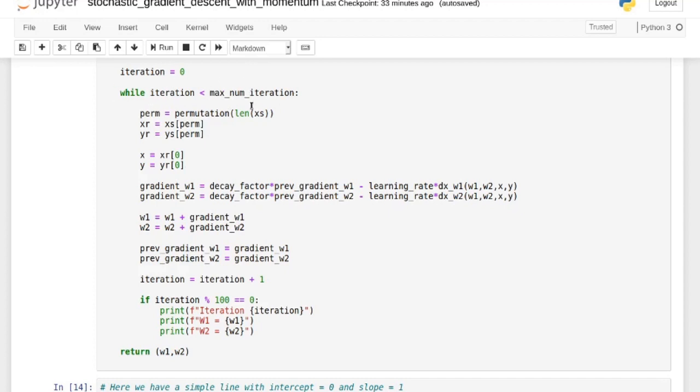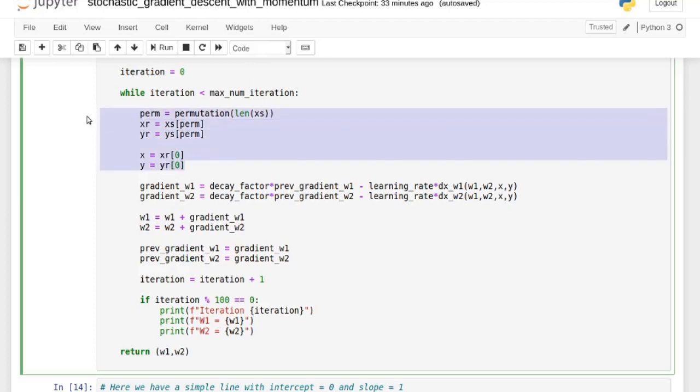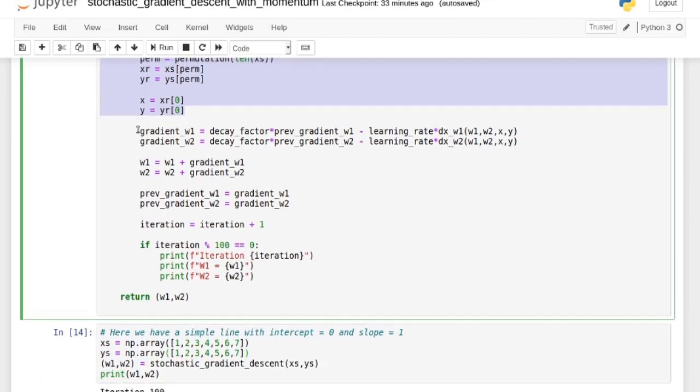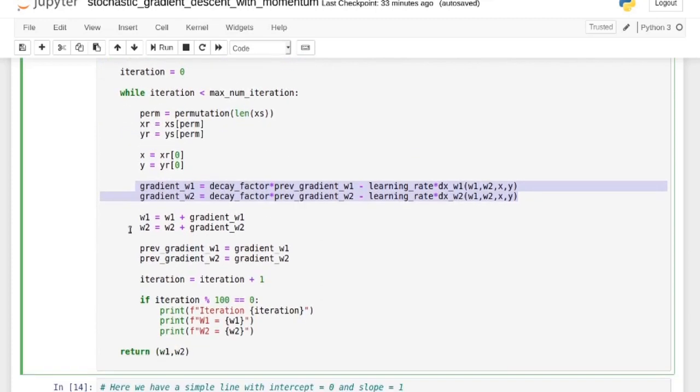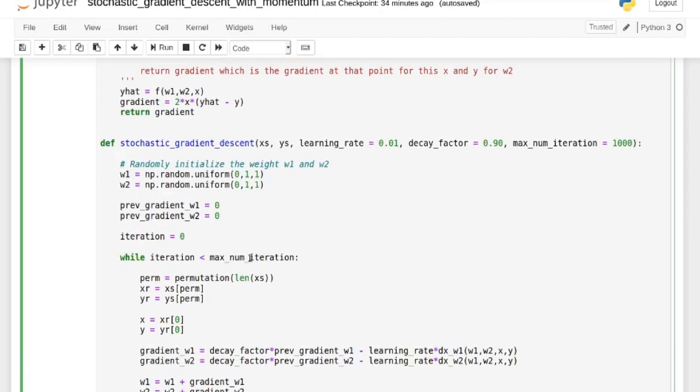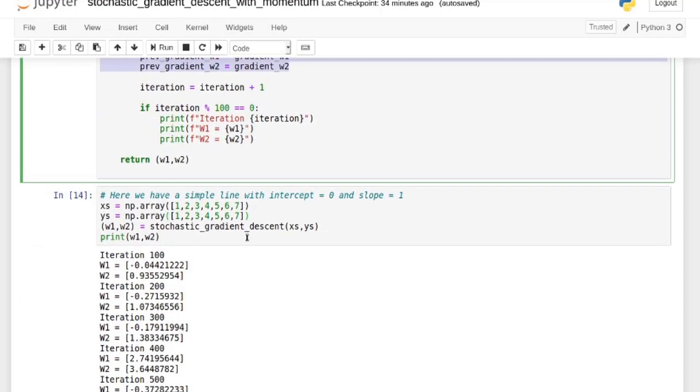Here, this is like the pseudocode, we're going to iterate till we hit the maximum number of iterations. So this part over here is just selecting one random data point. So we permute randomly, and then we'll select the first one. It will be different every time. Here, we calculate our gradient by doing exactly like the previous formula showed. So decay factor times previous gradient w1 minus learning rate times the partial derivative. Here, at first, it's going to be zero. So this part won't matter, right? And then you just update over here. And then you save the gradient over there. That's it. It's super simple. It's a super simple algorithm.